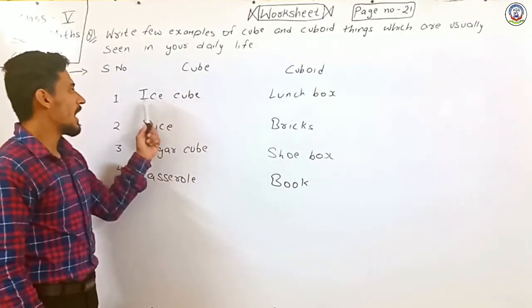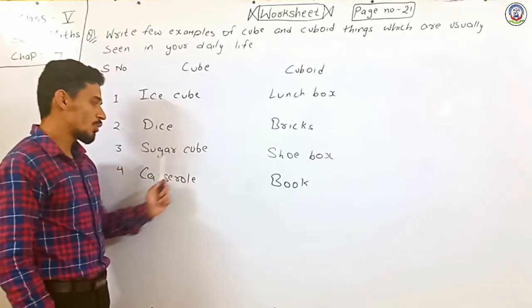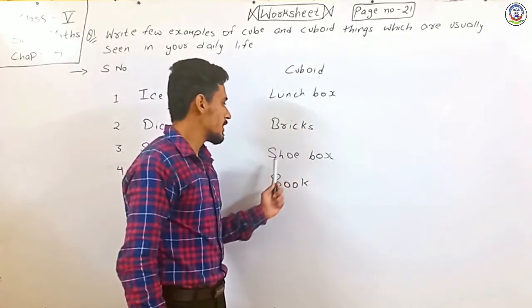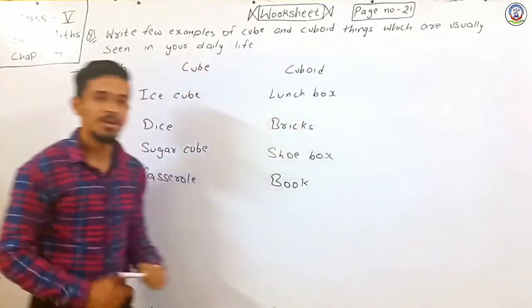So in this way, we can classify the different shapes, that is cube and cuboid. In cube, we write ice cube, dice, sugar cube and casserole. And in cuboid, we write lunch box, bricks, shoe box and book.